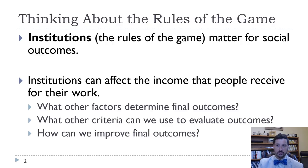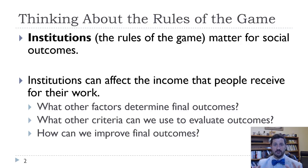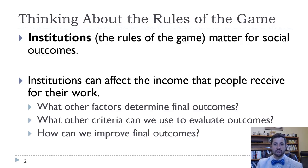That includes workers, it includes firms, it includes government. What are the rules that say how those people can interact, and often more specifically, how can they not interact? The institutions of an economy can be really important. We can see that similar countries with different institutions can have very different outcomes. And that's one of the things we're going to talk about here in Chapter 5.